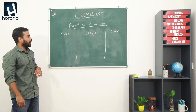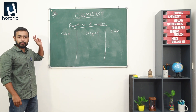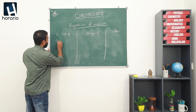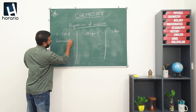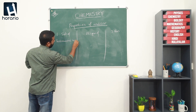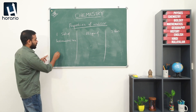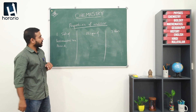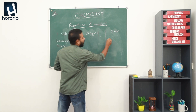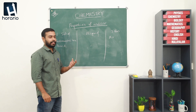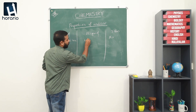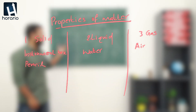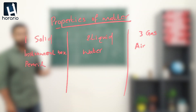First, in which category does the instrument box belong? It belongs to solid. Then the pencil - pencil belongs to solid. Air belongs to gas. Then water - water belongs to liquid. These are the materials and their physical states.